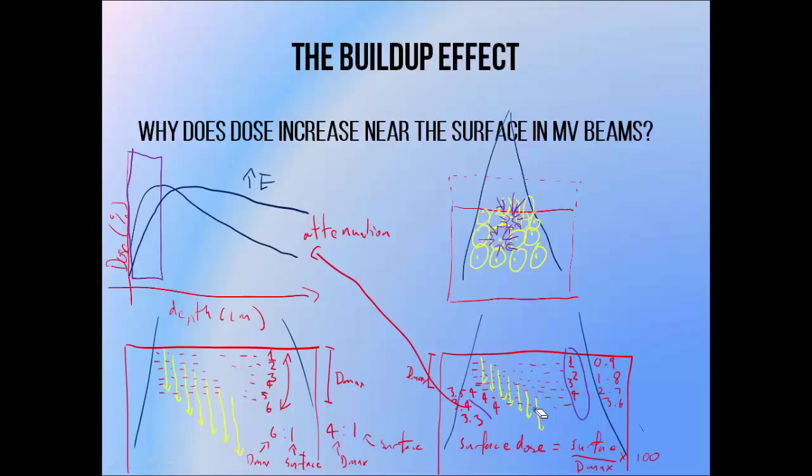You may be wondering why we don't see a buildup region in low energy kilovoltage beams. This is because low energy photons produce very low energy secondary electrons which have a very short range. Since the size of the buildup region varies with the range of secondary electrons, this region exists but we simply don't see it because it's very small.